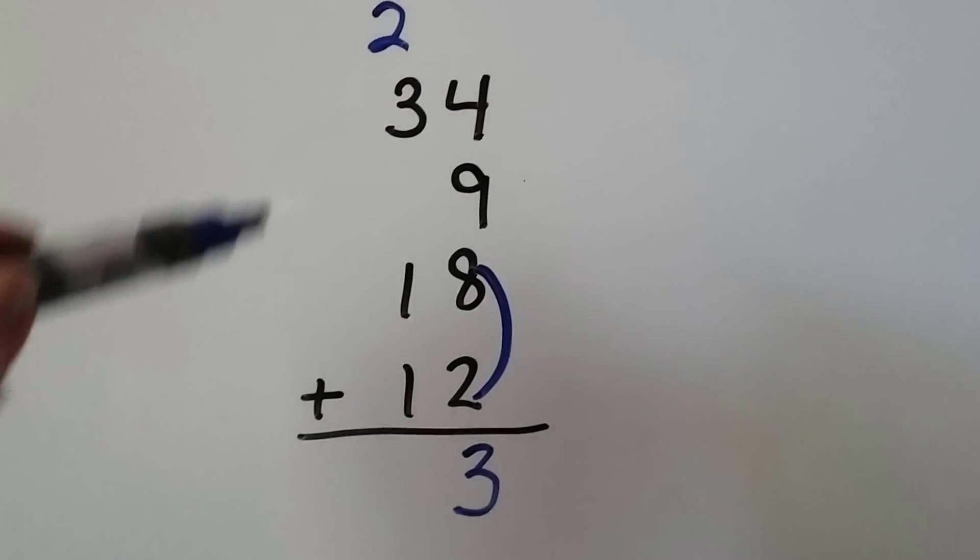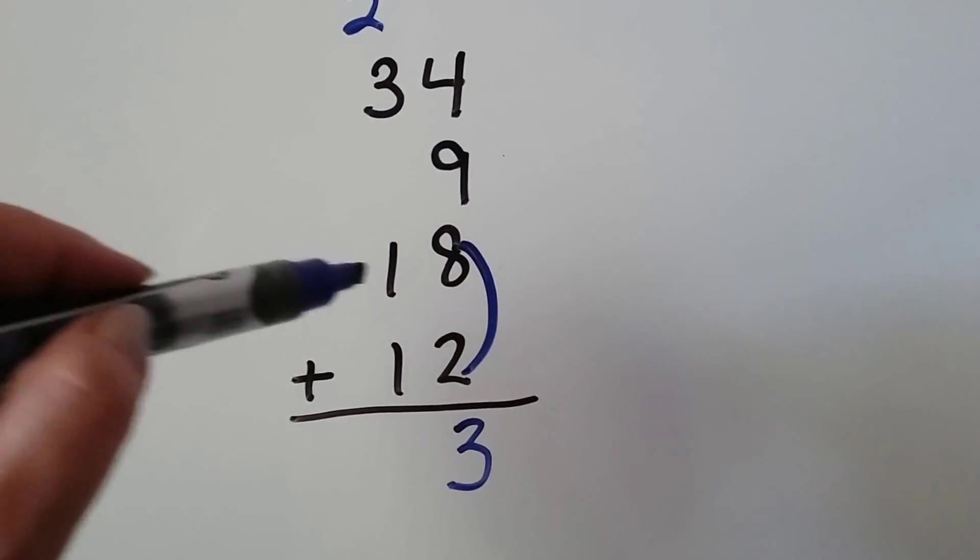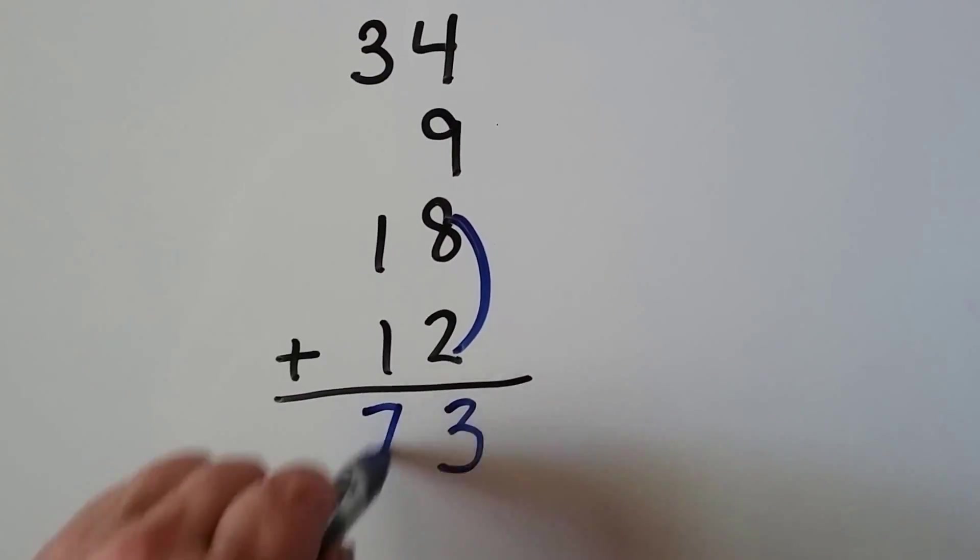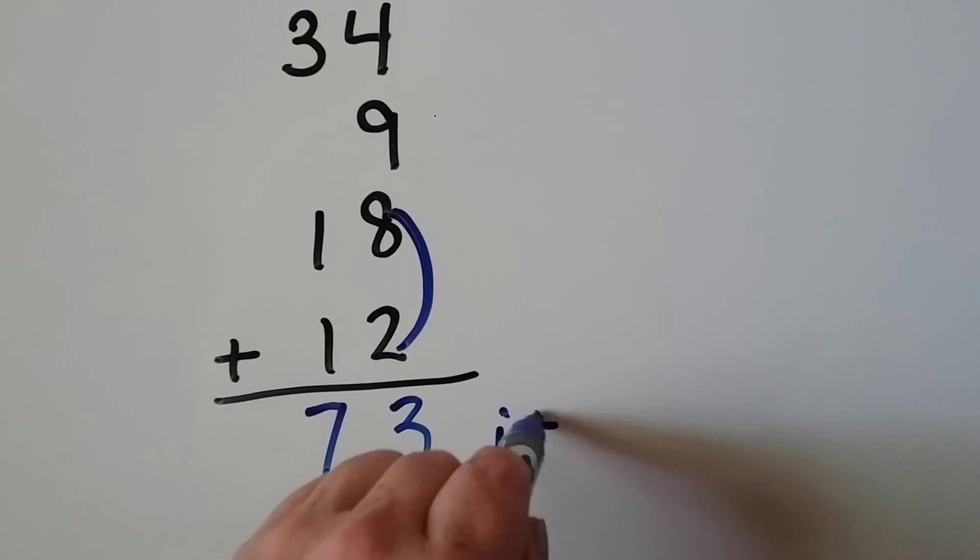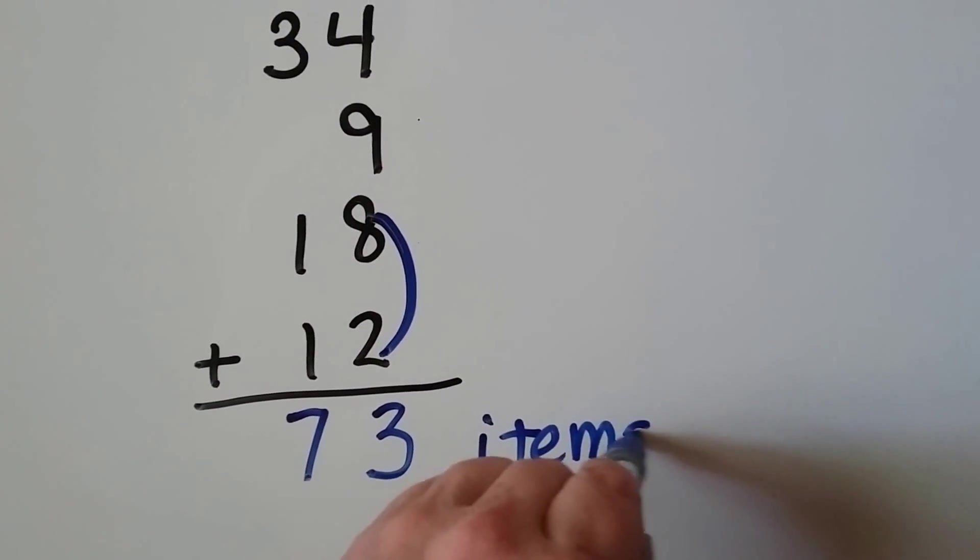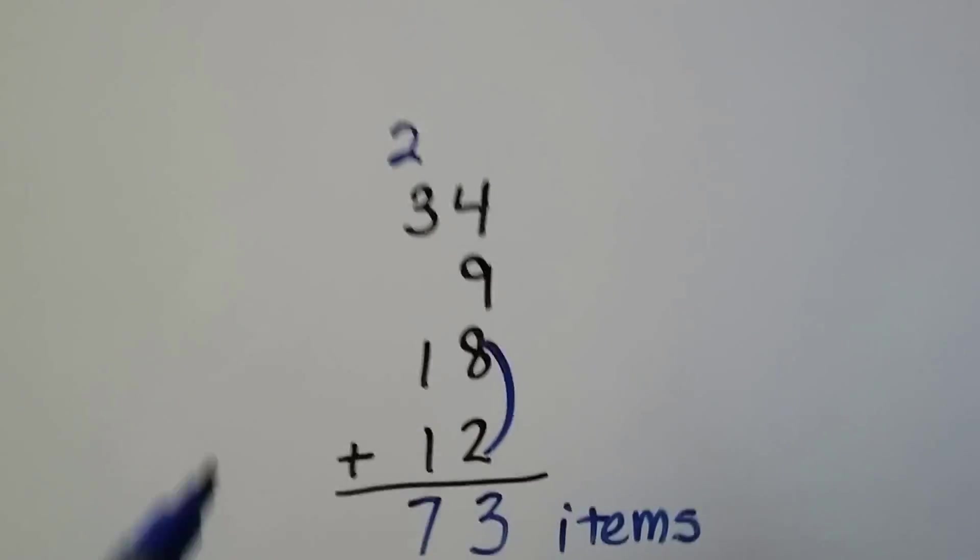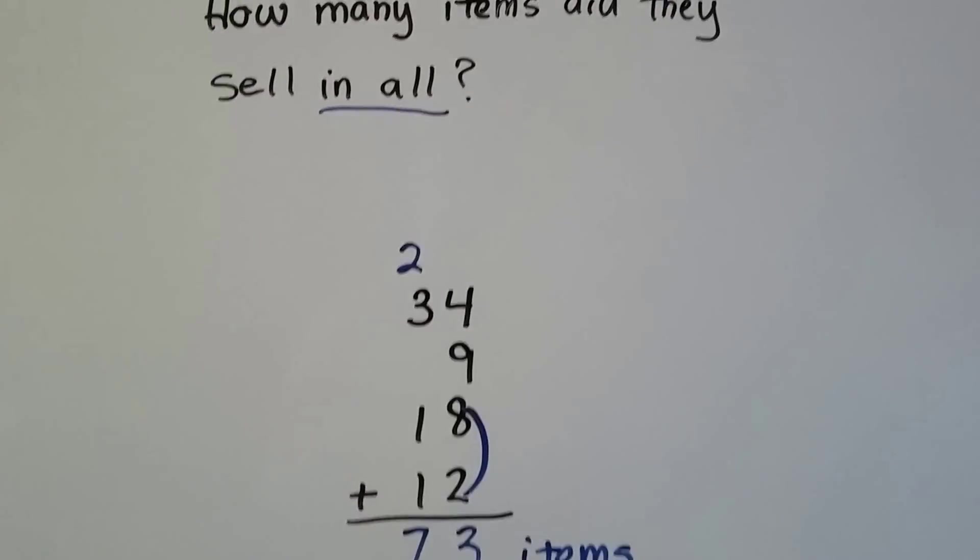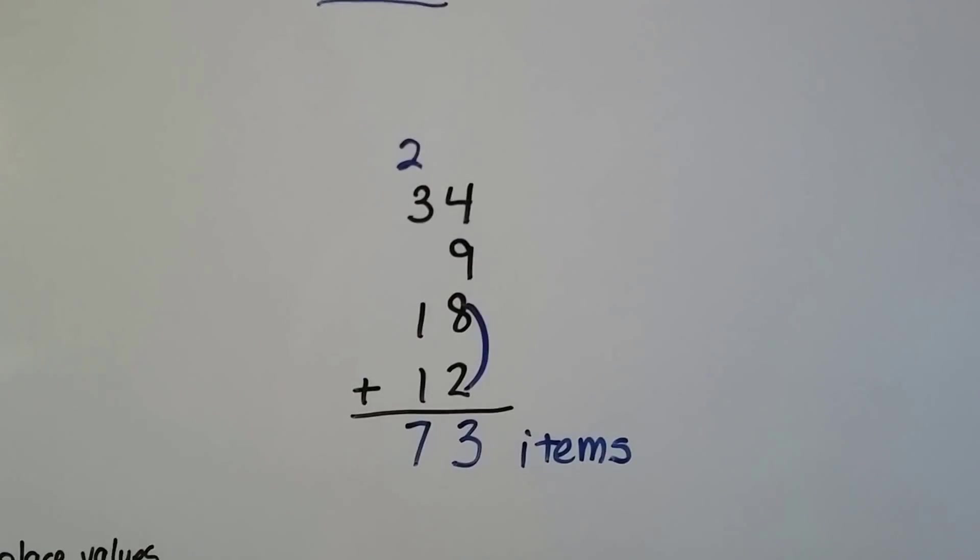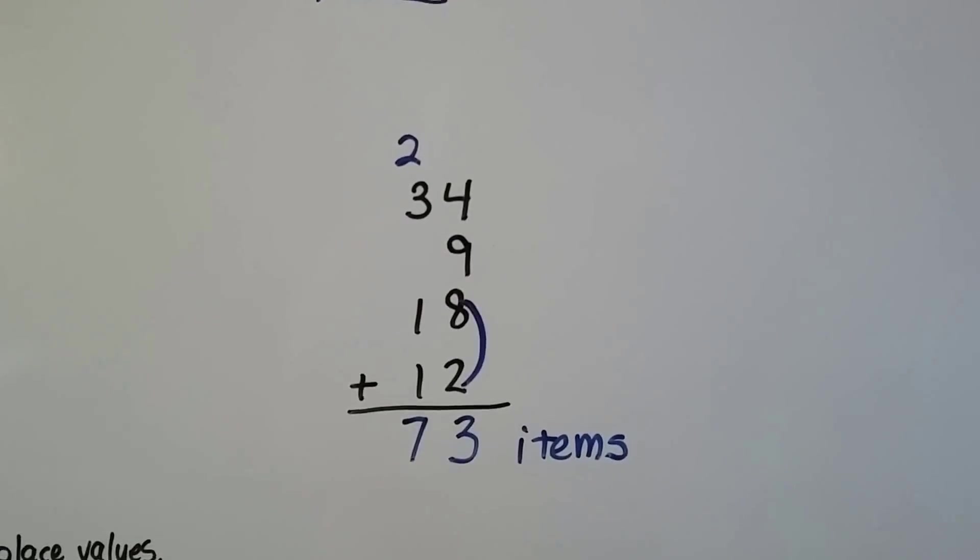Now we add the tens place. 2 and 3 is 5, 6, 7. 73 items. Because it asked us how many items did they sell. So it's 73 items. And we can add this on the calculator.